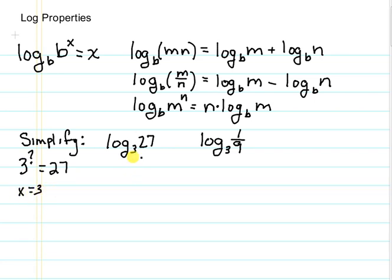Using logarithm properties we can rewrite 27 as 3 to the third power. Using our property up here, log of base b, and this b here, those match, we just get the exponent. So that's going to equal 3.